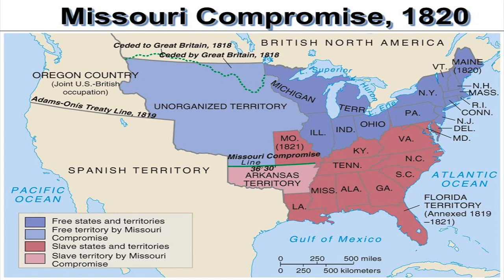At that time the US was divided between slave states and non-slave states, and the territory of Missouri was home to a few large plantations run with slaves. However, many if not most families in Missouri did not own slaves — many were settlers from the northern states. The US government eventually decided on admitting Missouri as a slave state, balanced out by admitting Maine as a non-slave state.